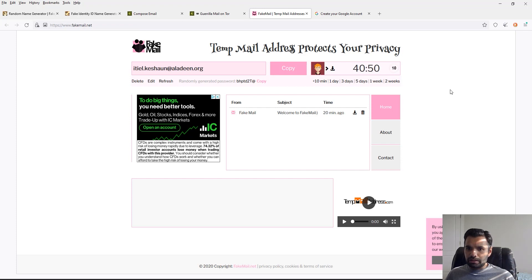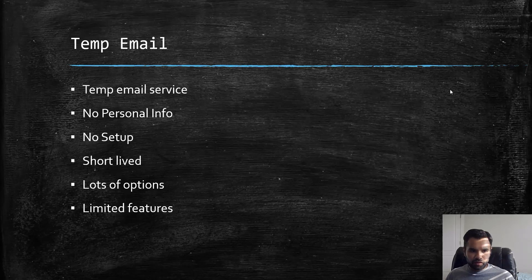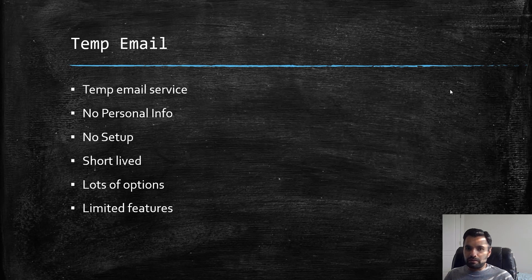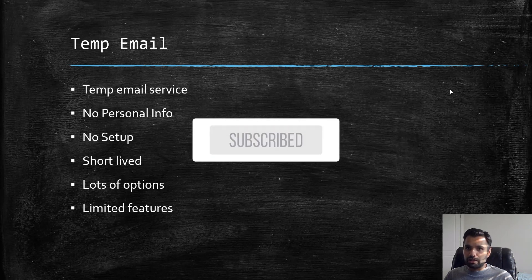Make sure you read the privacy information before using any of these services, and never use your real identity with temporary email addresses either. These are some viable options — we'll talk about more in the future. If you know other solutions or onion services for fake identity or temporary email, please share in the comments so everyone can benefit. Feel free to ask questions, hit the like button, and I'll see you next Monday. Bye.